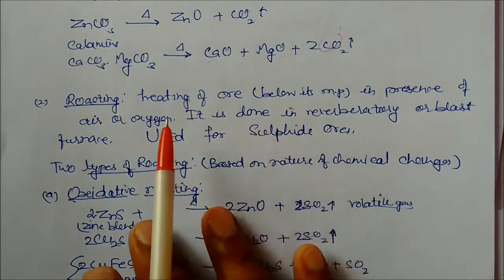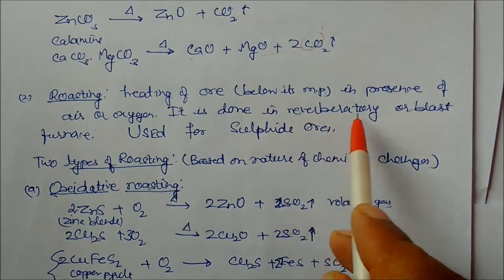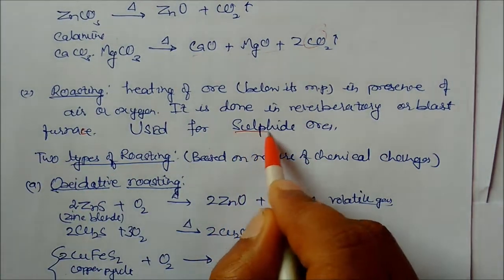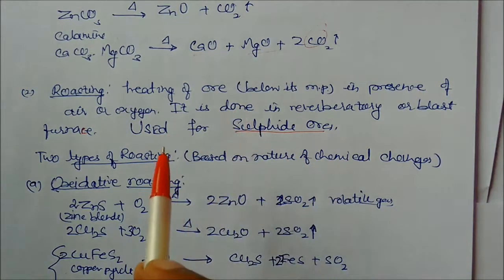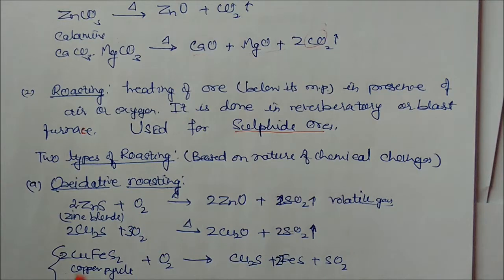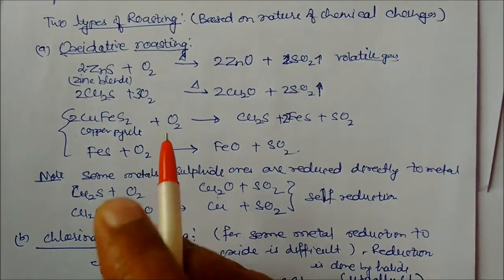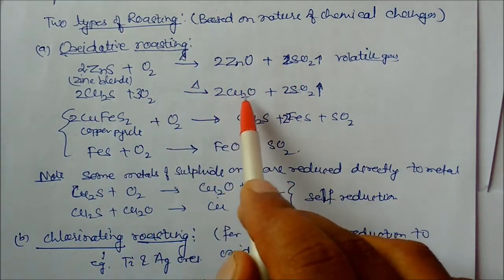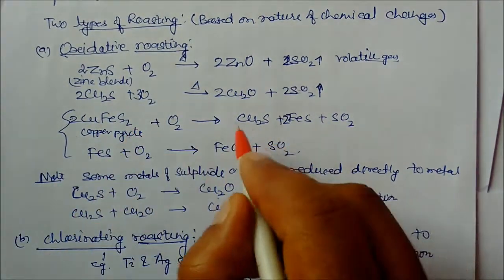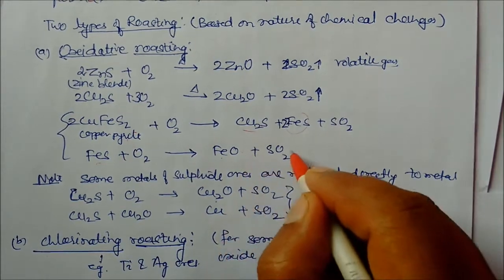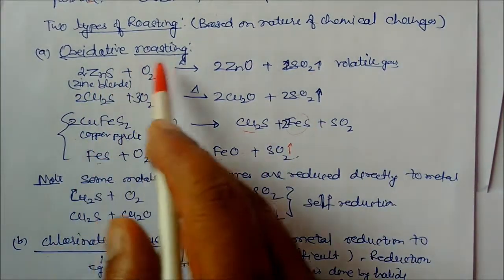Roasting is the heating of ore below its melting point in the presence of air or oxygen, done in a reverberatory furnace or blast furnace. It is used for sulfide ores and the ore must be in solid state. In oxidative roasting with excess oxygen: zinc sulfide + oxygen gives zinc oxide + sulfur dioxide; copper glance reacts with oxygen to give Cu2O plus sulfur dioxide; copper pyrite gives iron oxide plus sulfur dioxide as impurities come out from the ores.